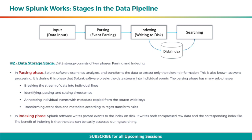Moving ahead, in the data storage stage there are two phases: parsing and indexing. In the parsing phase, Splunk software examines, analyzes, and transforms the data to extract only the relevant information. This is also known as event processing. It is during this phase that Splunk software breaks the data stream into individual events. The parsing phase has many sub-phases: breaking the stream of data into individual lines, identifying, parsing, and setting timestamps, annotating individual events with metadata copied from the source-wide keys, and transforming event data and metadata according to regex transform rules.